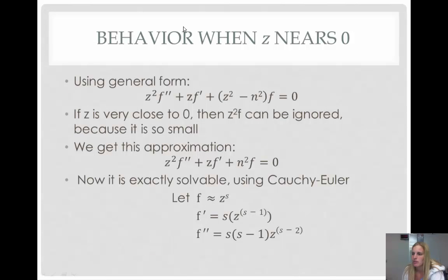Now we are going to observe the behavior when z nears zero using the general form introduced before. We can see that if z is very close to zero, then z squared f can be ignored because it is so small. Now, z squared f double prime and z f prime cannot be ignored because there is a chance that the derivatives could be large enough that it could be greater or equal to n squared times f.